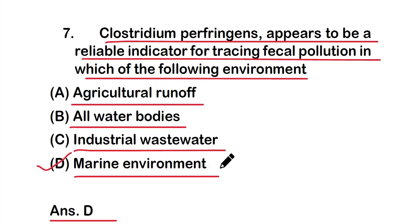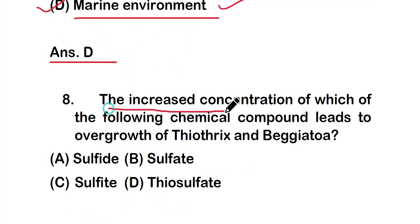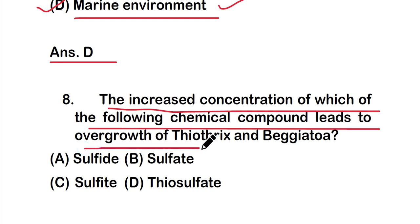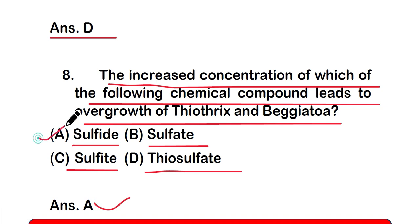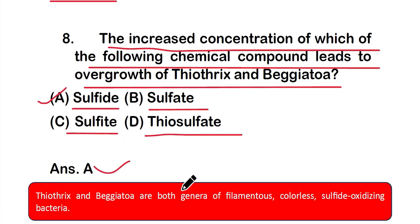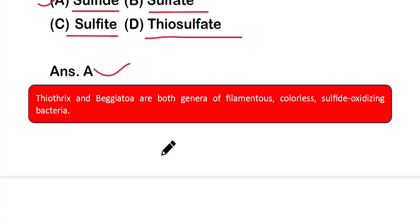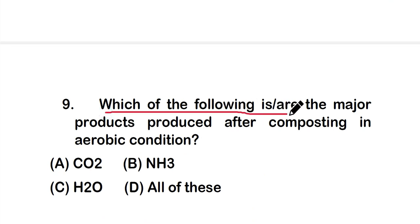Question eight: increased concentration of which chemical compound leads to overgrowth of Thiothrix and Beggiatoa? Options: sulfide, sulfate, sulfite, or thiosulfate. The right answer is option A — sulfide. Thiothrix and Beggiatoa are both genera of filamentous colorless sulfide-oxidizing organisms, so increased sulfide concentration leads to their overgrowth.